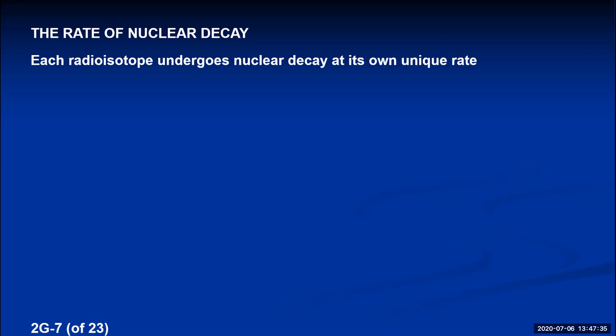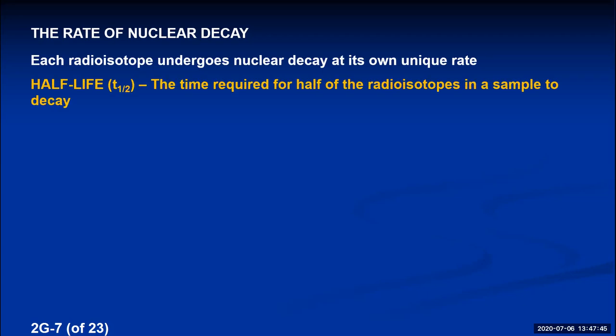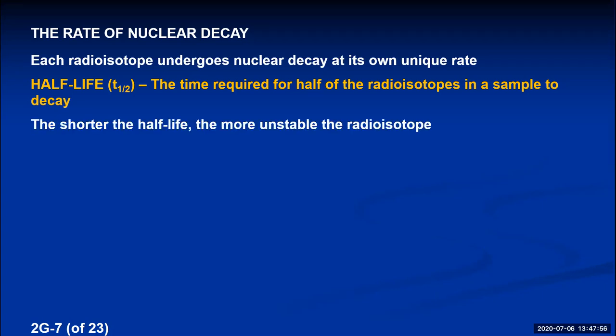For any type of nuclear decay — alpha decay, beta minus, beta plus, electron capture, or spontaneous fission — every radioactive nucleus decays at a specific rate. Each radioisotope undergoes nuclear decay at its own unique speed, measured by a value called its half-life, abbreviated T₁/₂. The half-life is the time required for half of the radioisotopes in a sample to decay into something more stable. A short half-life means the isotope is very unstable; a long half-life means it's less radioactive.